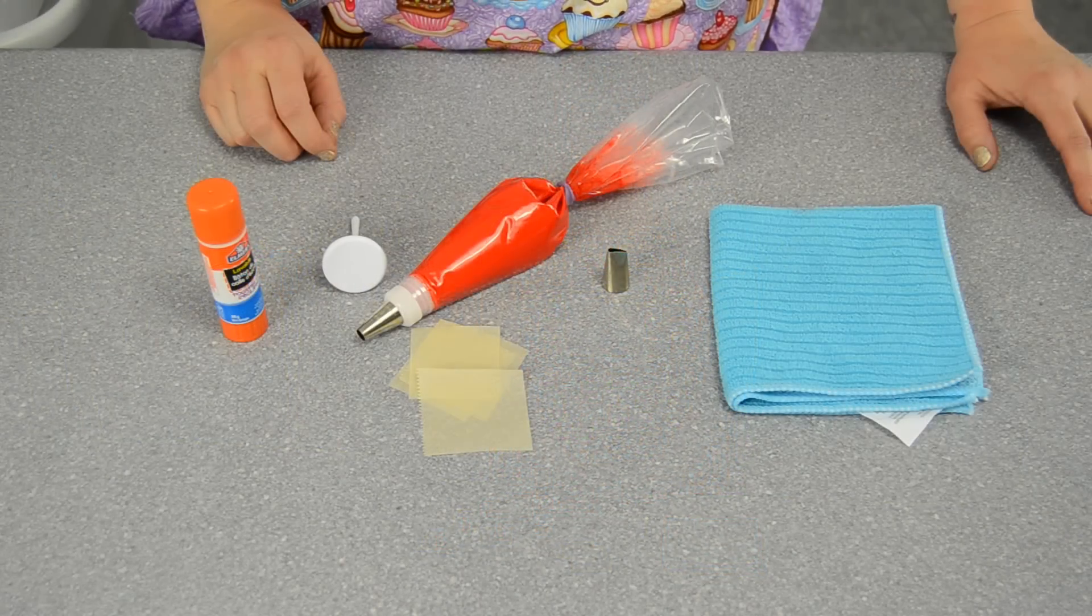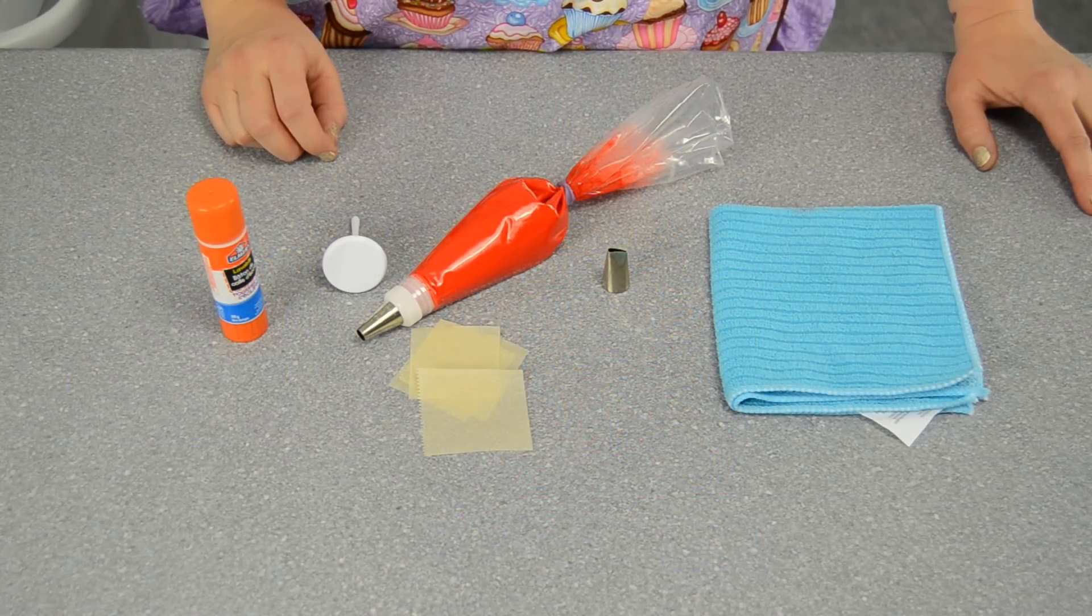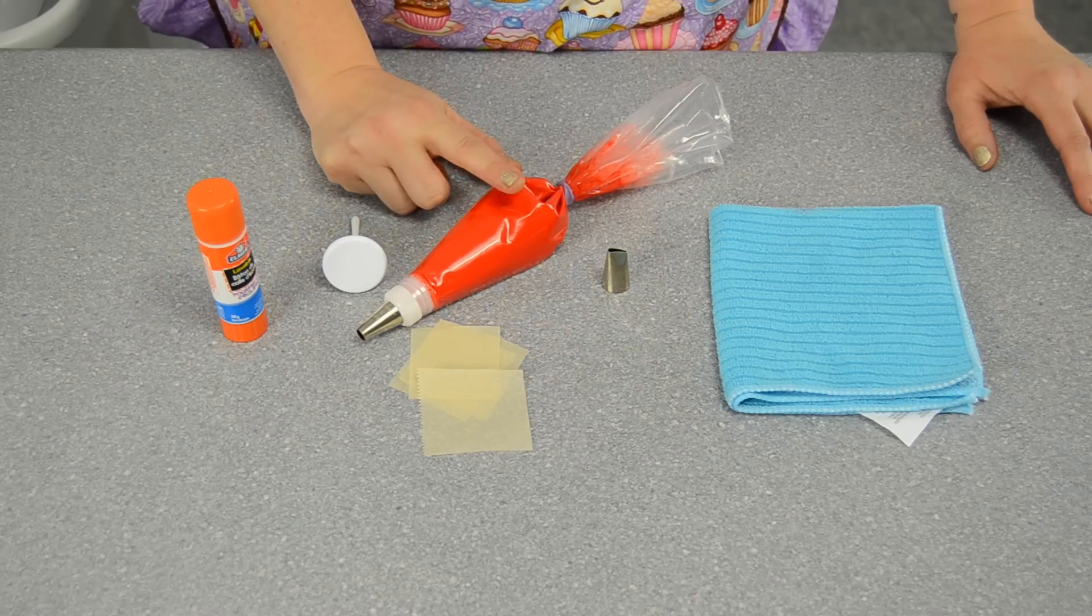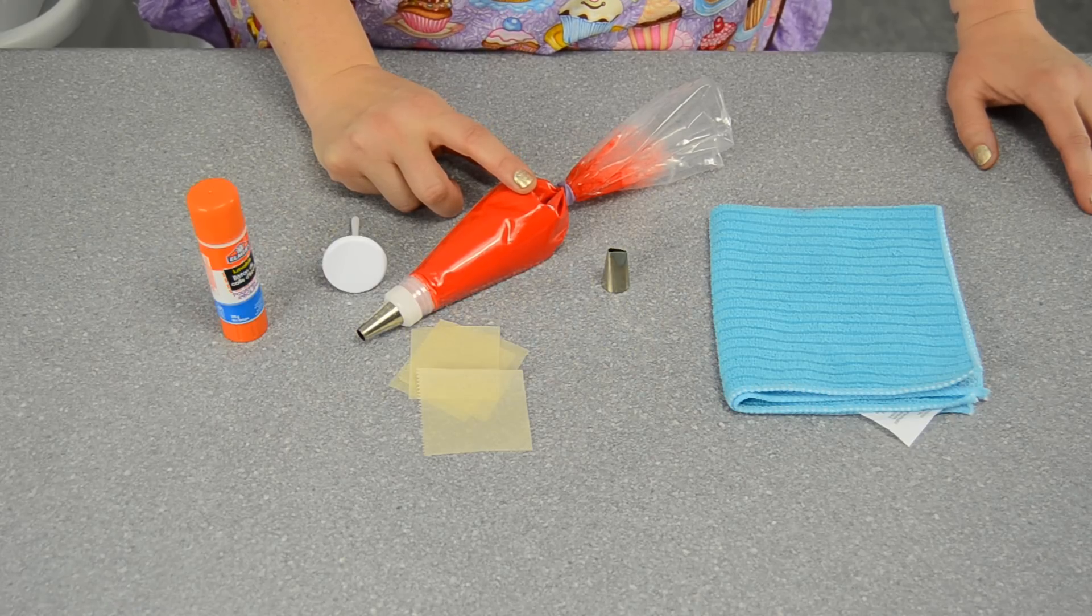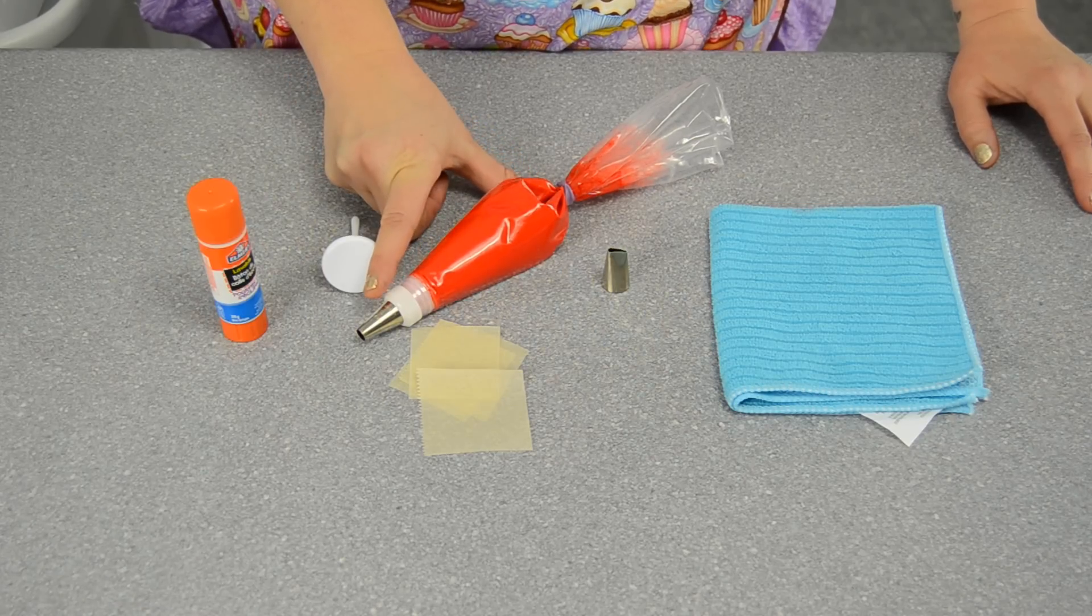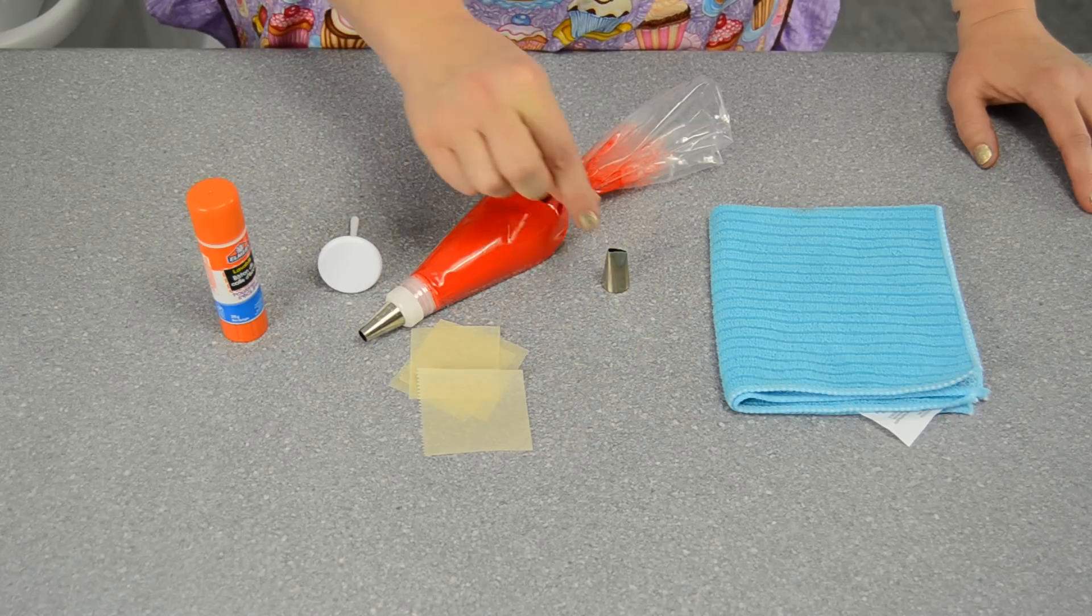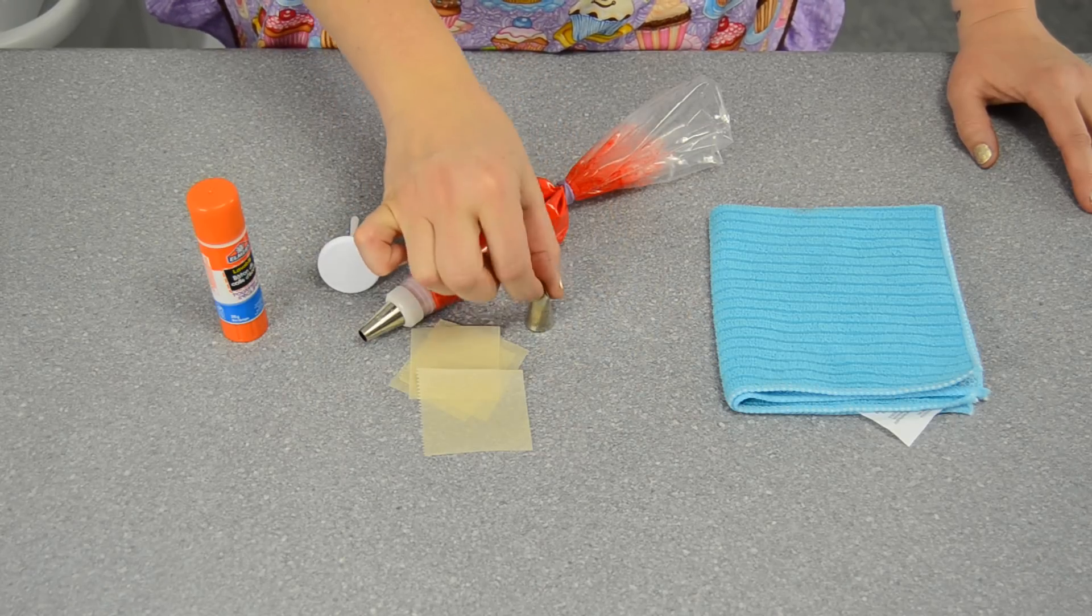What you're going to need to make the royal icing ribbon roses is royal icing, and we have a video up and we'll link that for you at the bottom in the show notes. This bag is fitted with a number 12 round tip Wilton, and you'll also need a number 104 petal tip.